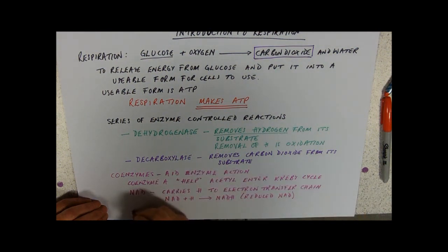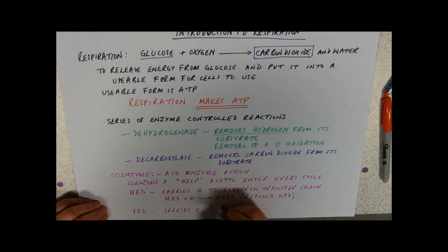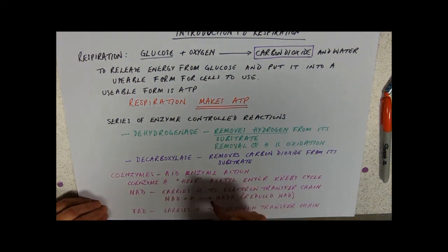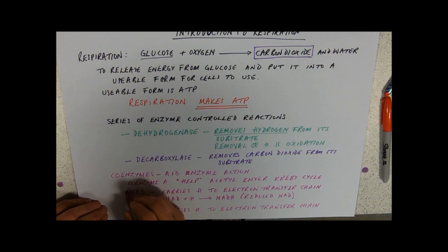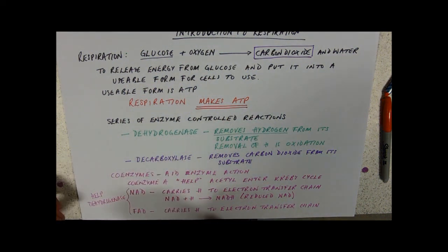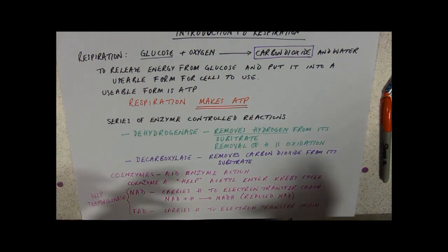We've got FAD as well and its job is also to carry hydrogen to the electron transfer chain. So again, these two are helping dehydrogenase. How are they helping? Dehydrogenase takes the hydrogen away from the substrate and the coenzyme carries it away.